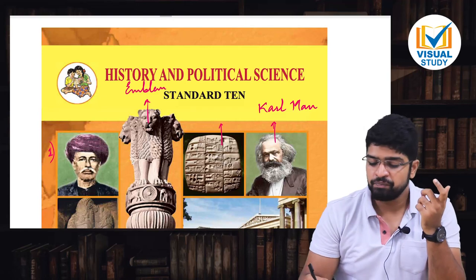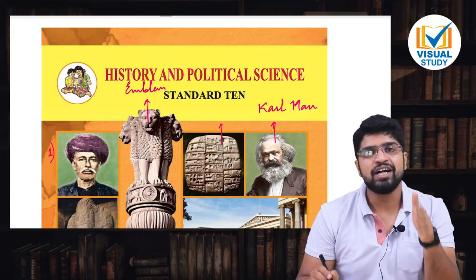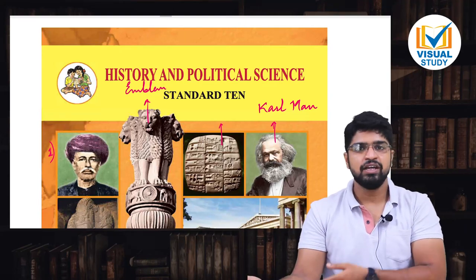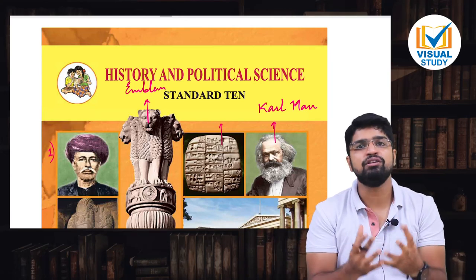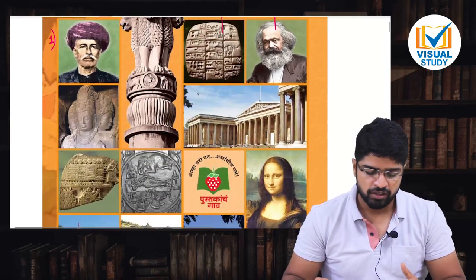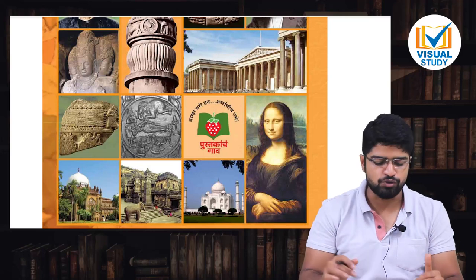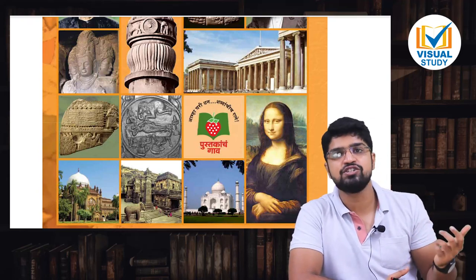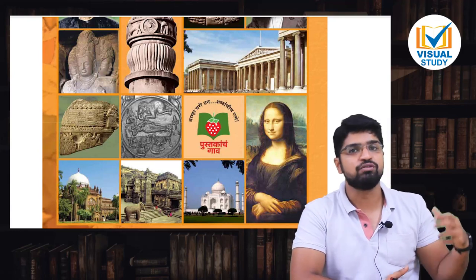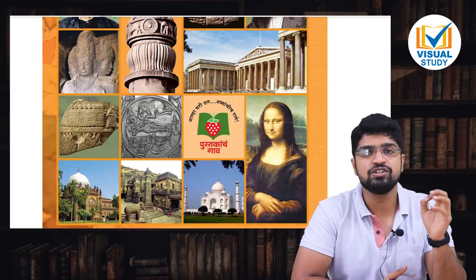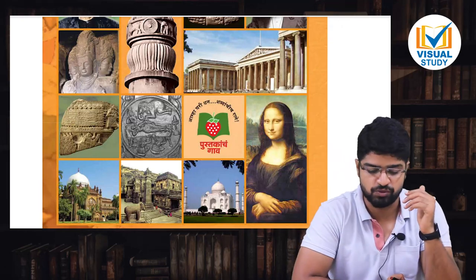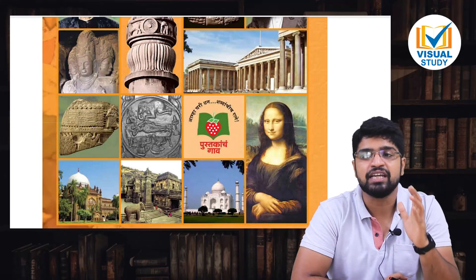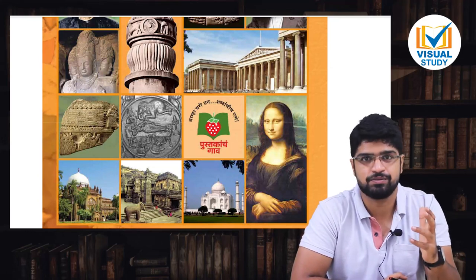Jiski nazar, jiske law ki nazar, jiske parliament ki nazar desh ke charo corners mein faili hui hai. Next thing is what we can see over here is the copper coins which have been found, copper plates which have been found at the historical places, the historical times. The fourth nominated figure, the fourth great figure that we can see is none other than the great Karl Marx. Karl Marx was a person who understood the major differences between the haves and the have-nots, the rich, the middle class and the upper class.